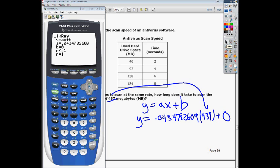Now, I just go over and type 0.0434782609, parentheses, 437, plus 0, even though you don't really need to do plus 0. Hit enter.